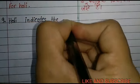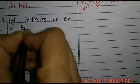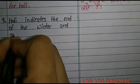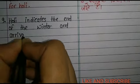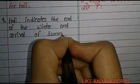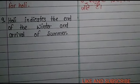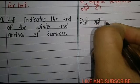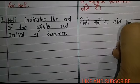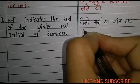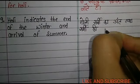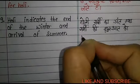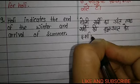Ninth line: Holi indicates the end of winter and the arrival of summer. Holi सर्दी का अंत तथा गर्मी की शुरुवात को दर्शाती है।